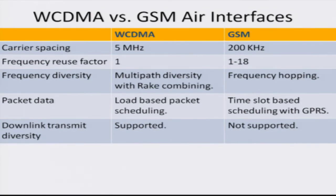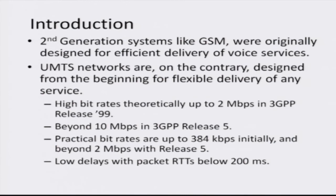WCDMA supports packet data and transmit diversity, meaning it can use multiple antennas to significantly enhance the reliability of the communication link. In comparison to GSM, which was originally designed for voice services, CDMA or UMTS was designed to provide high data rates of several megabits per second, going beyond 10 megabits per second in release 5.